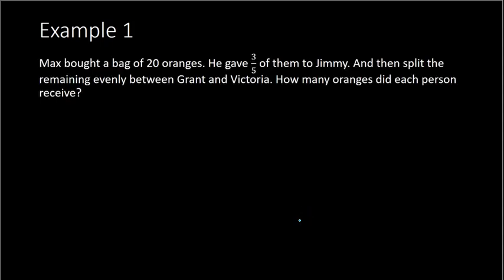Example 1: Max bought a bag of 20 oranges. He gave three-fifths of them to Jimmy and then split the remaining evenly between Grant and Victoria. How many oranges did each person receive? Let's begin with Jimmy, because that is who we began giving oranges to. He gave three-fifths of his oranges to Jimmy, and he started with 20. So the question is, what is three-fifths of 20? The word of usually means multiply in math. So three-fifths of 20 means we take three-fifths times 20.